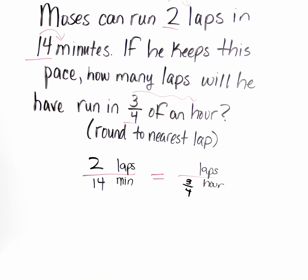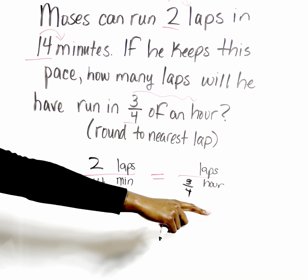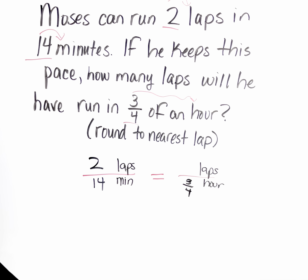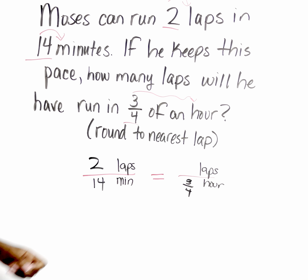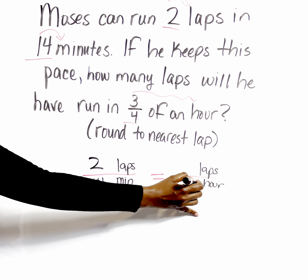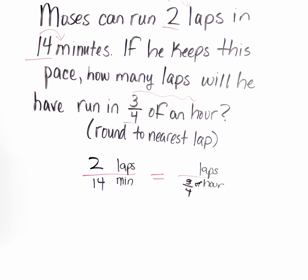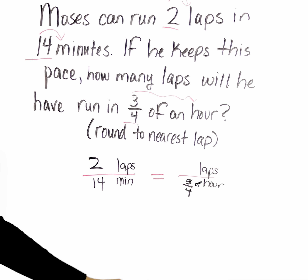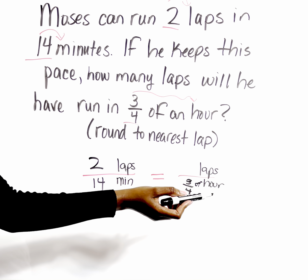So of course, we can change minutes to hours, or we can change hours to minutes. Normally, it's easier just to change hours to minutes because we would end up with another fraction, and we don't want a fraction. So three-fourths of an hour is going to be 45 minutes.